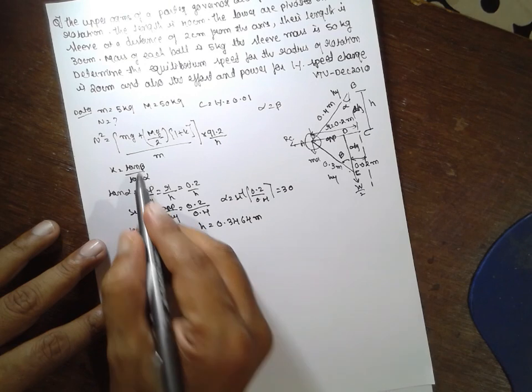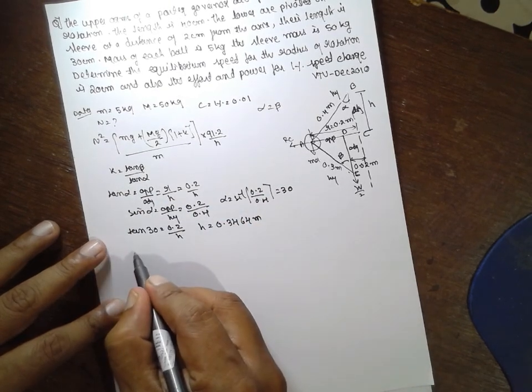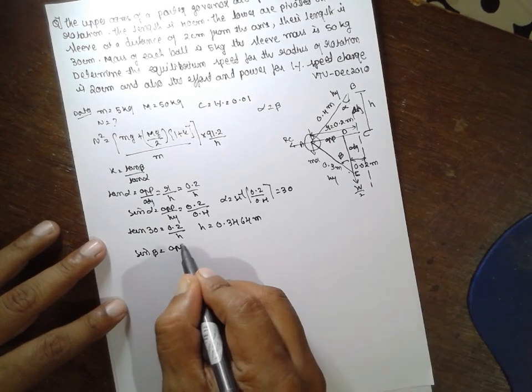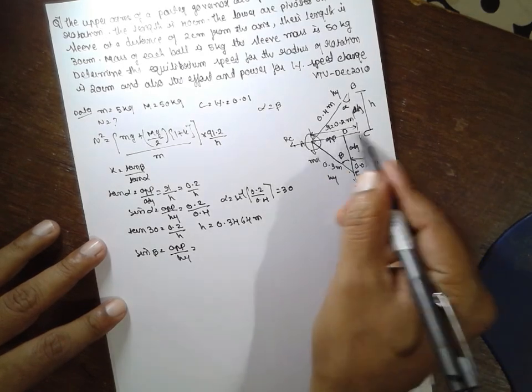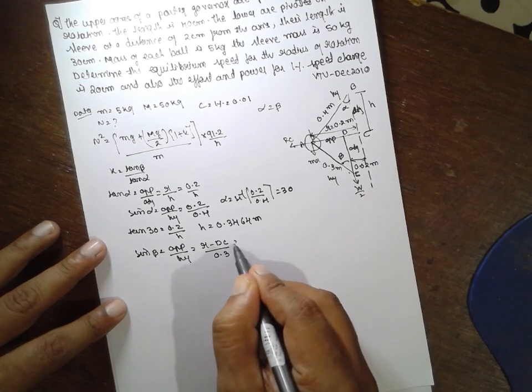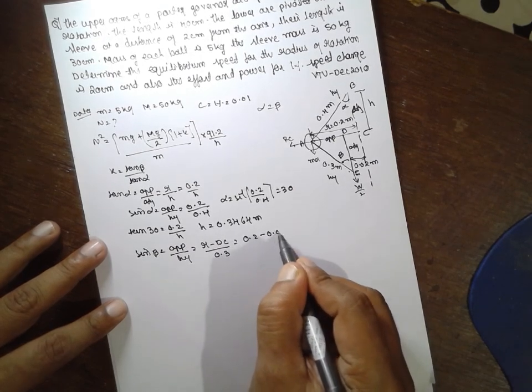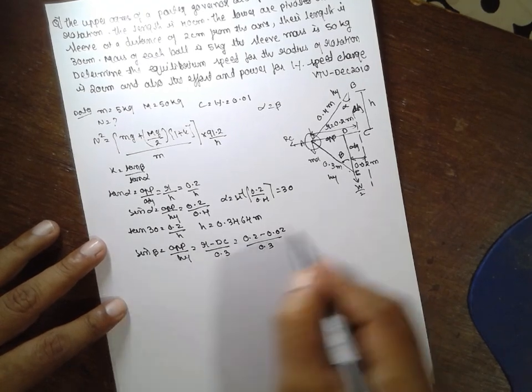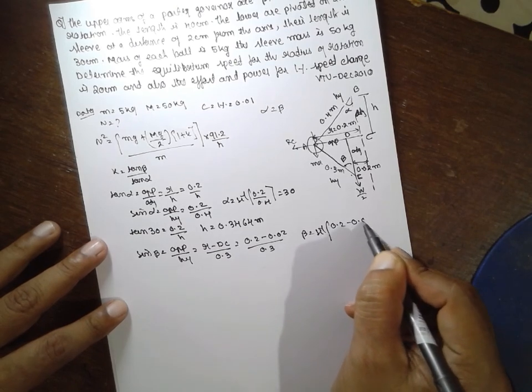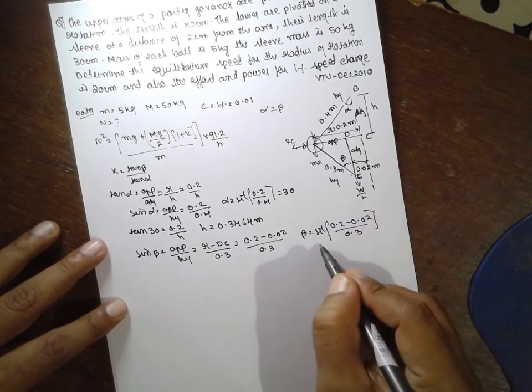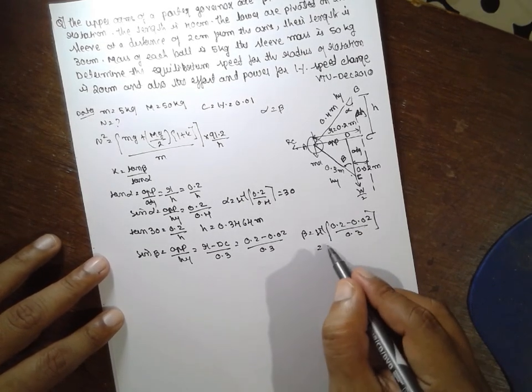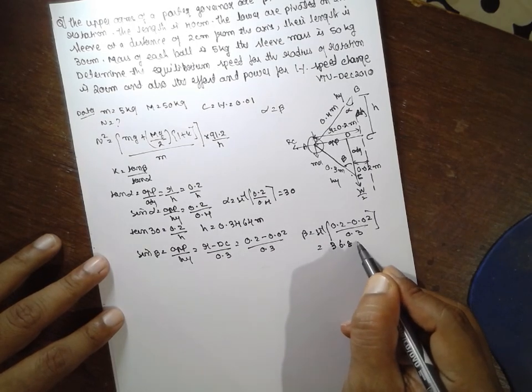Once you know the h, find out beta. Directly you can find out beta. That is sin beta is equal to opposite by hypotenuse. What is opposite? This is the opposite, r divided by dc divided by hypotenuse is 0.3. What is r? 0.2 minus 0.02 divided by 0.3. Where beta is equal to sin inverse 0.2 minus 0.02 divided by 0.3. The beta will be 36.8698.